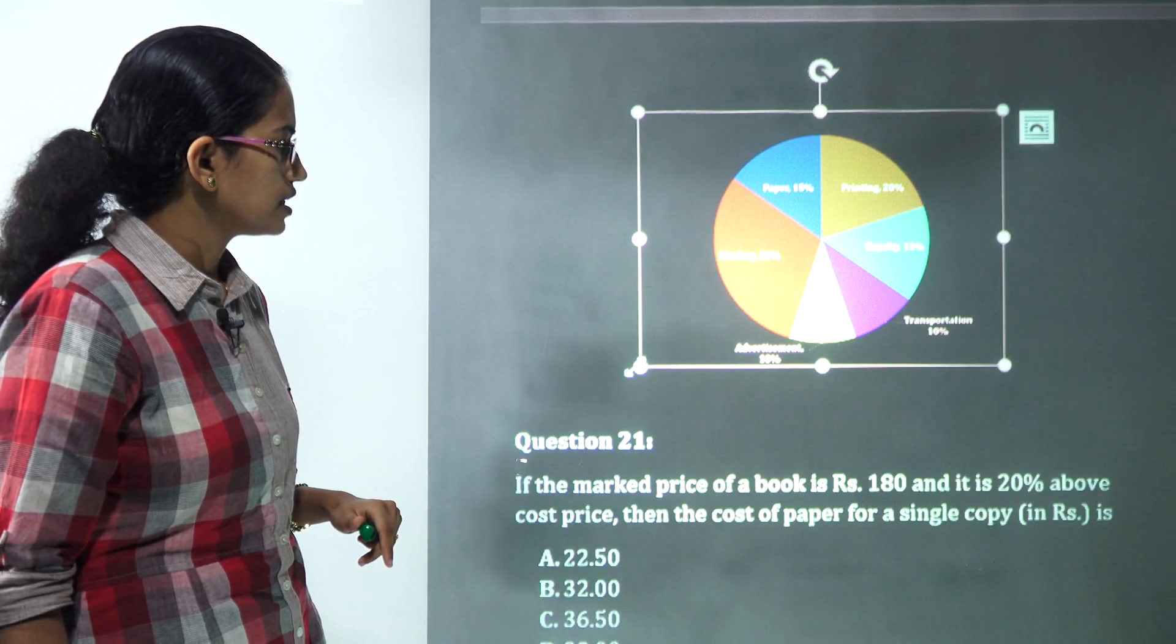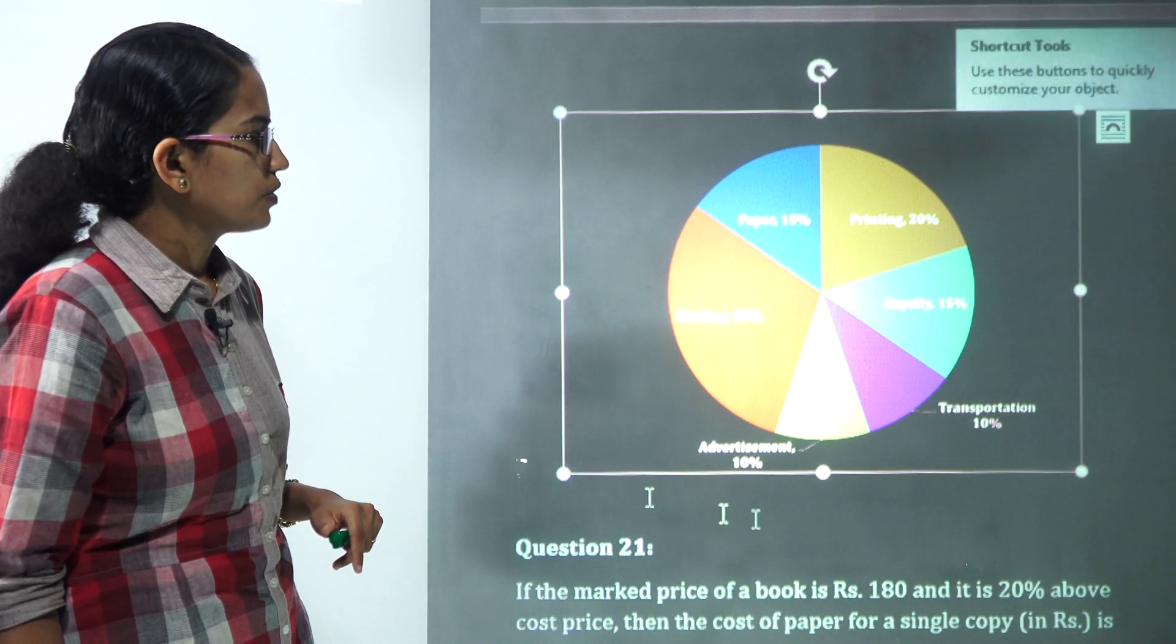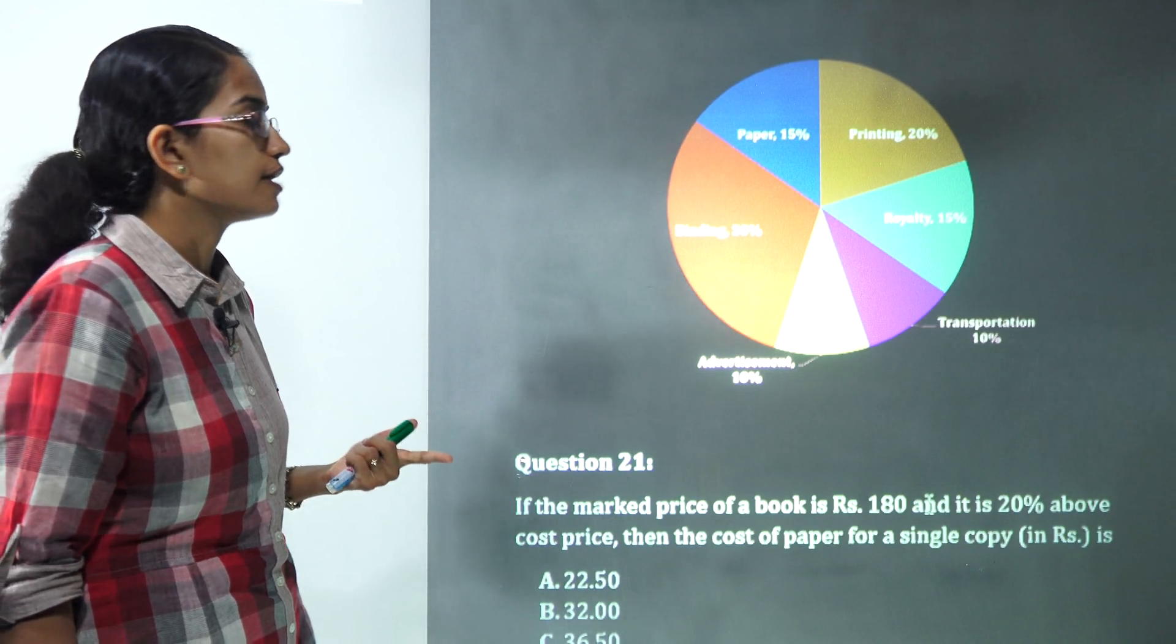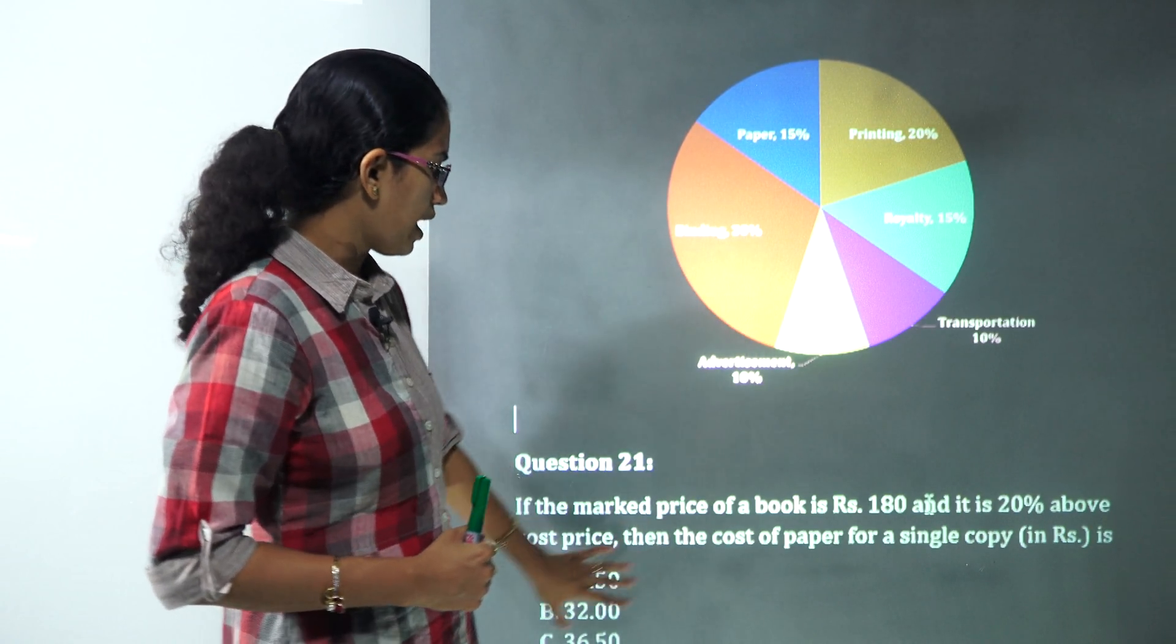Coming on to the data interpretation question. You have the first question that talks about a pie graph and the second about a bar graph. On this pie graph you have three questions.